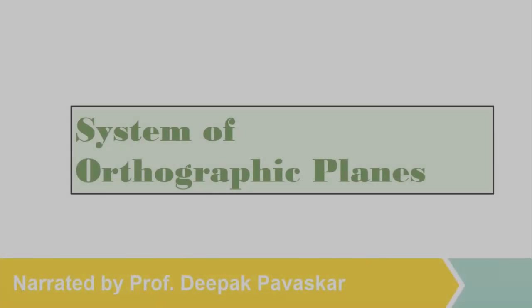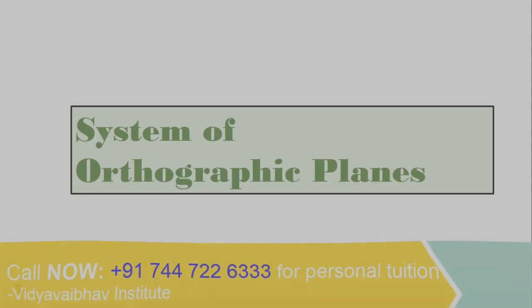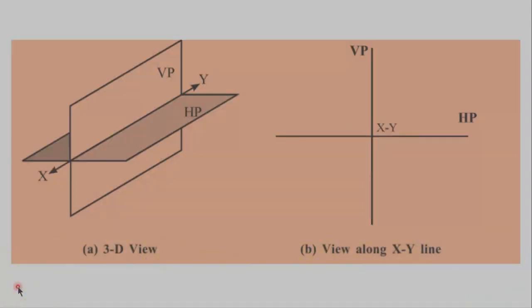System of Orthographic Planes. Orthogonal means perpendicular, hence this system consists of two perpendicular planes. This is the horizontal plane, HP, while this is the vertical plane, VP. These planes intersect each other along this line we call the XY line.